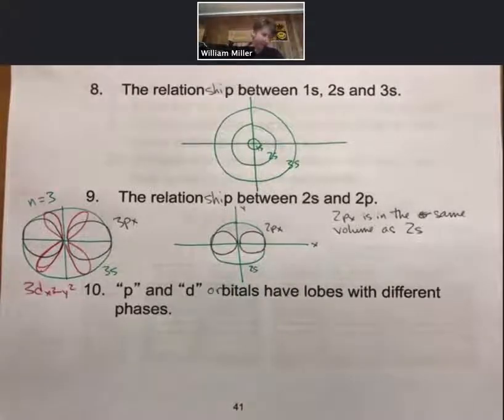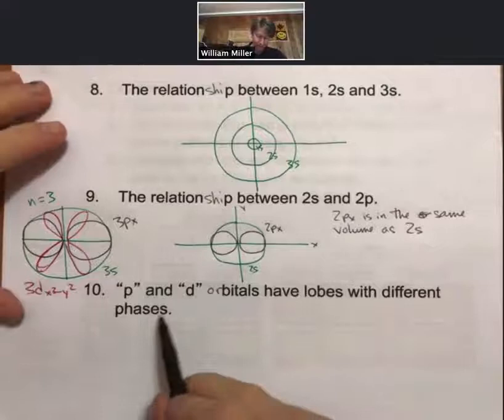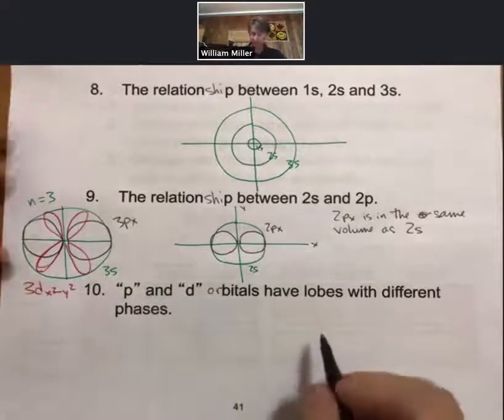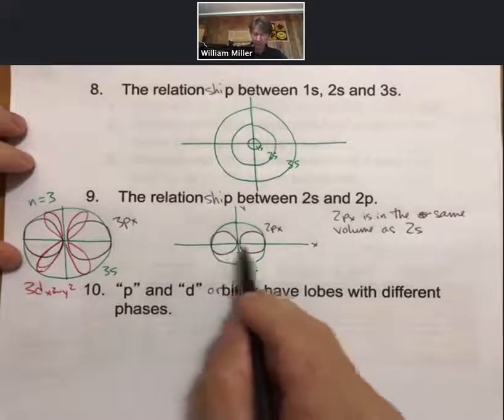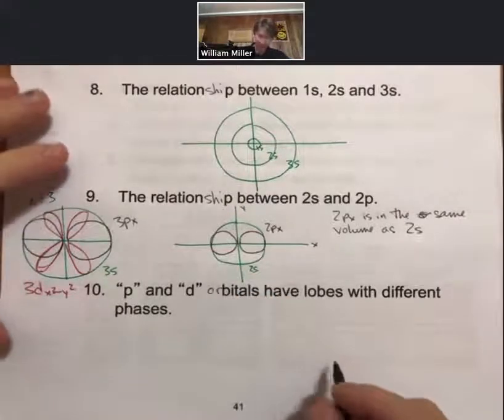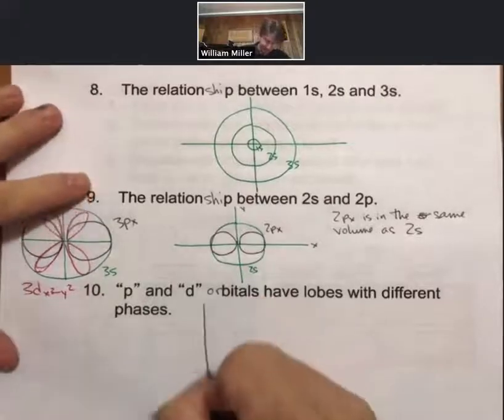Okay, and that continues on, but for now let's talk about the p and d orbitals. They have lobes—that's what we're going to call these pieces—with different phases. And so let's just draw what I mean by that.